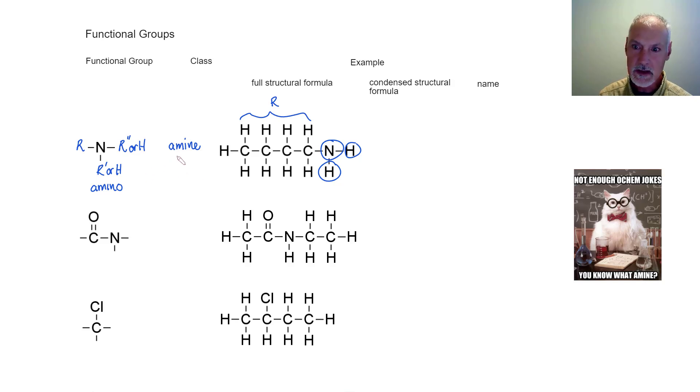And here our group connected to a hydrogen and a hydrogen, fitting the bill of an amine. Its condensed formula would be CH3, CH2, CH2, CH2, and then NH2. So the presence of N there indicates an amine.